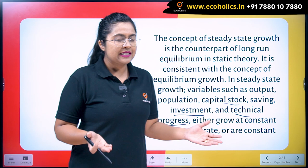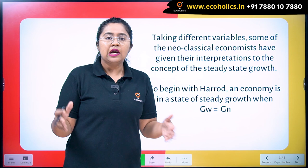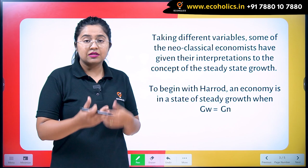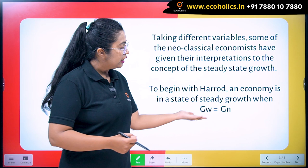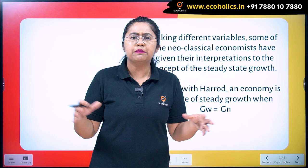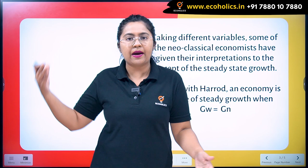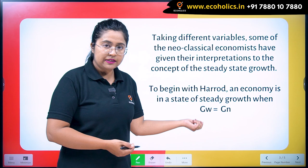Starting with the Harrod-Domar model — a major, successful, and most prominent model that students study initially when learning economic growth models. Harrod gave this steady state growth definition by including warranted growth equated with the natural growth rate. In Harrod's model, there are three types of growth rates: the actual growth rate, the warranted growth rate which is also the full capacity growth rate, and the natural growth rate which is like a ceiling growth rate. Steady state growth is achieved when the warranted growth rate equals the natural growth rate.